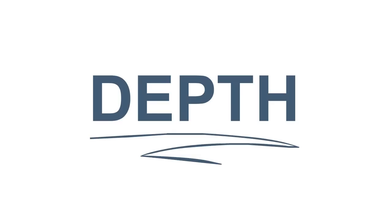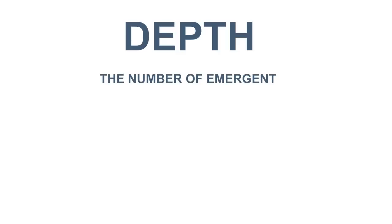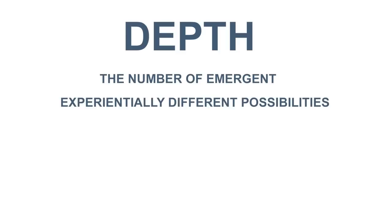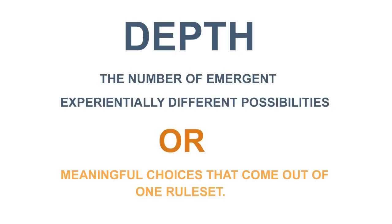I could probably just end this episode right there, but just for kicks, let's unpack what that means, starting with depth. Depth is simply the number of emergent, experientially different possibilities or meaningful choices that come out of one rule set.